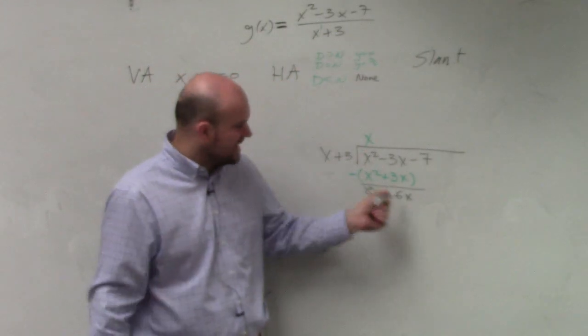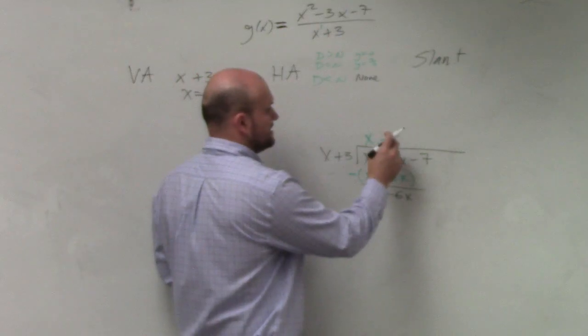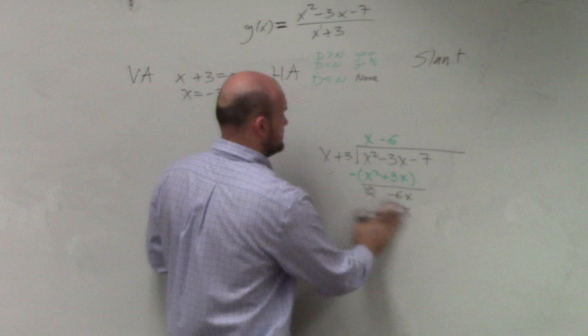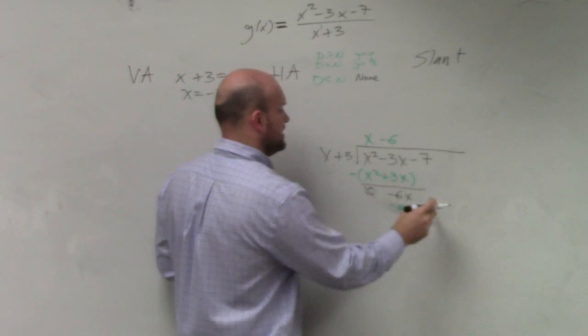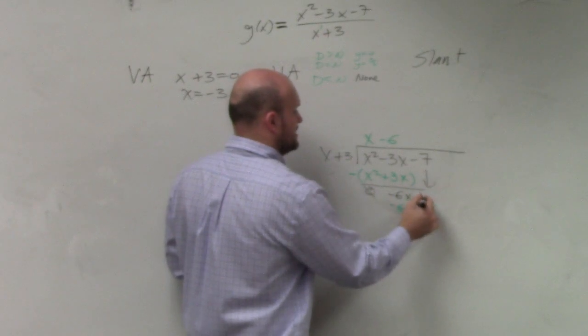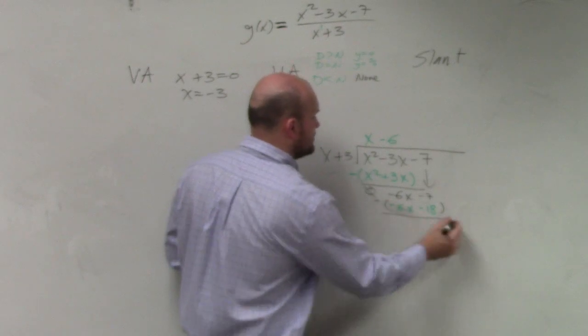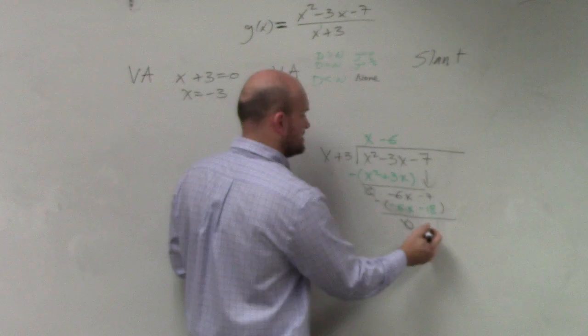Now, how many times is x divided into negative 6x? Negative 6 times. Negative 6 times x is a negative 6x. Actually, let's use that green. Negative 6 times 3 is a negative 18. Bring down the negative 7. Subtract your rows. That becomes a plus, so that's 11.